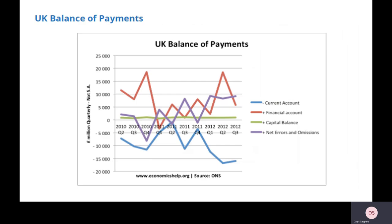When you operate a current account deficit, as the UK does, that money has got to come from somewhere. Data shows the blue line tracking the UK's current account deficit below zero, while the capital and financial accounts are in surplus above zero — the green line being the capital account, the red being the financial account. The inflows on the capital and financial account cover the deficit on the current account. It's also worth noting net errors and omissions, which corrects for inaccuracies. The UK covers its current account deficit by running a surplus on the capital and financial accounts.